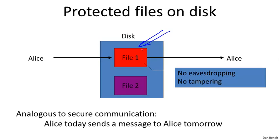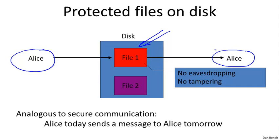I want to make a minor philosophical point: storing encrypted files on disk is very much the same as protecting communication between Alice and Bob. When you store files on disk, it's basically Alice who stores a file today wanting to read it tomorrow. So rather than communicating between two parties, in the case of stored disk encryption it's Alice today communicating with Alice tomorrow. The two scenarios — secure communications and secure files — are philosophically the same.